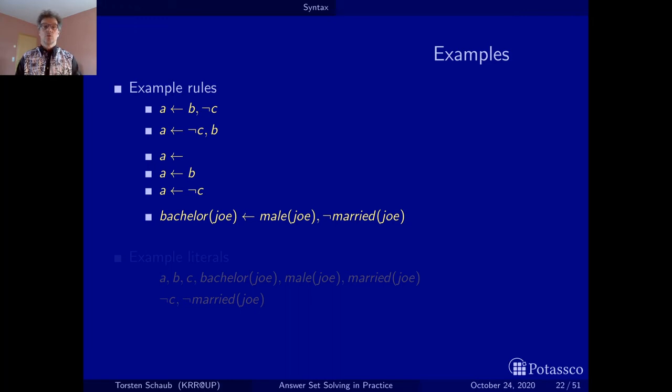Then apart from the notion of rules, and this whole set of rules can be regarded as a program, we also had the notion of literals. So all atoms that we have been seeing, so a, b, c, bachelor(joe), male(joe), married(joe), are positive literals or atoms. This means the same thing. It's just sometimes when you talk about something in the context of literals, you want to say positive and negative ones, while if you just talk about atoms, you would use the term atoms. Positive literals and atoms is the same thing. And we have used also two negative literals, not c and not married(joe), and these are examples for negative literals.